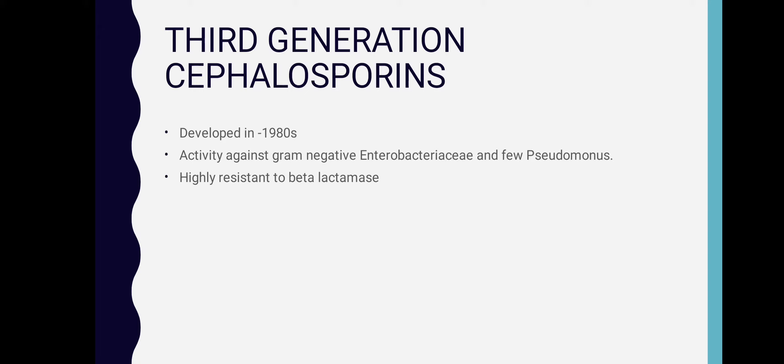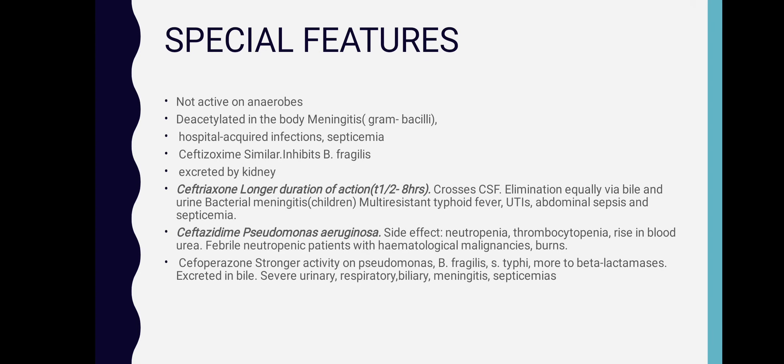Third generation cephalosporins were developed in the 1980s and have activity against gram-negative Enterobacteriaceae and a few Pseudomonas species. They are highly resistant to beta-lactamases. Special features: not active on anaerobes, deacetylated in the body, used in meningitis, hospital-acquired infections, and septicemia. Cefotaxime similarly inhibits Bacteroides fragilis and is excreted by the kidney.